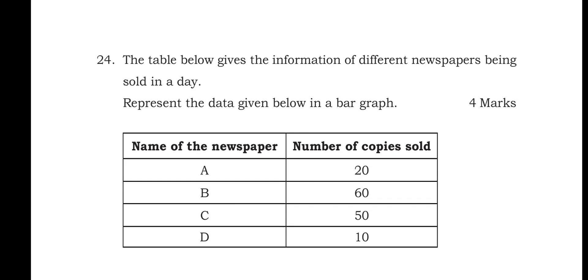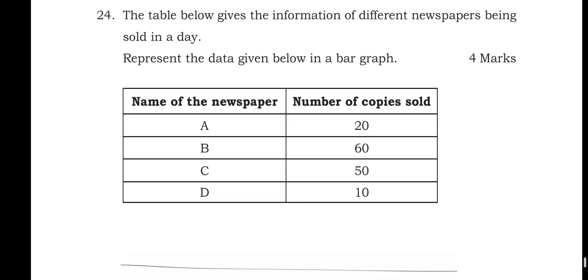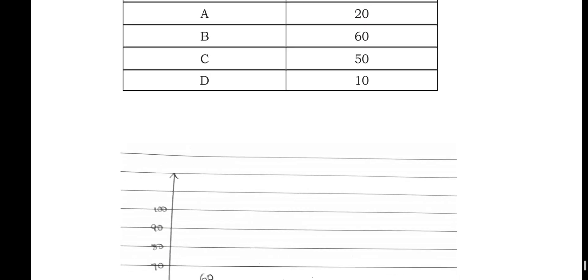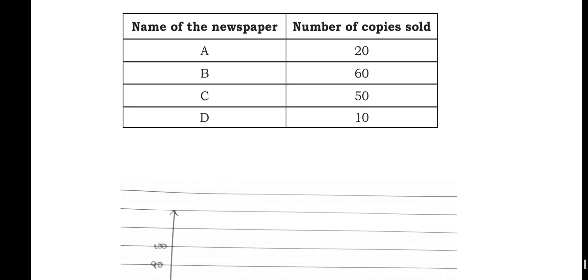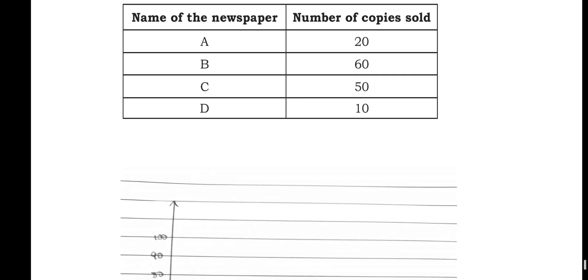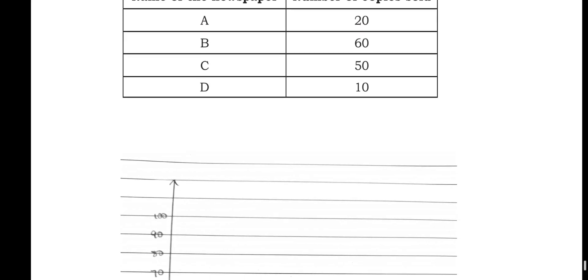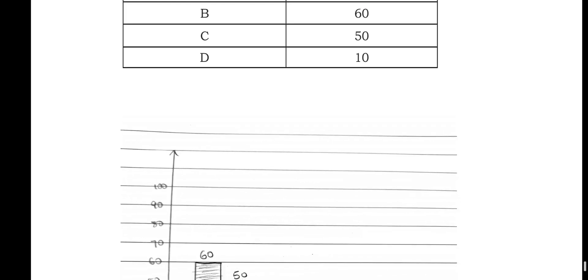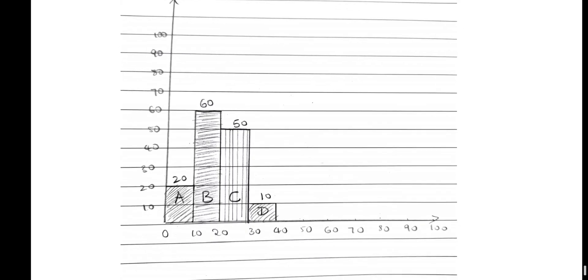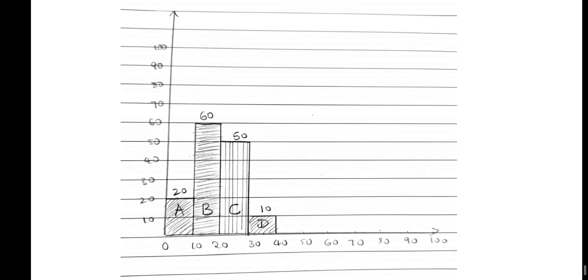The table gives information about different newspapers sold in a day, represented in a bar graph. Newspaper A: 20 copies, B: 60 copies, C: 50 copies, D: 10 copies. I have drawn the bar graph — please check it out. Thank you, students.